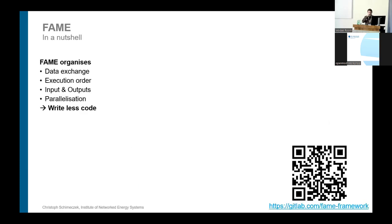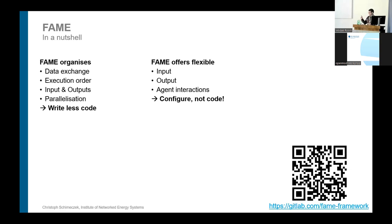In a nutshell, FAME organizes your data exchange and the execution order of agents in the simulation. It handles inputs and outputs for you and also offers parallelization without any effort — nothing to do. You write a lot less code, and you can configure all of this: inputs, outputs, and all agent interactions.